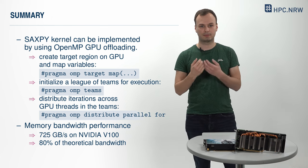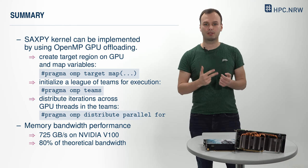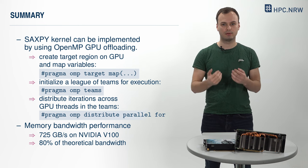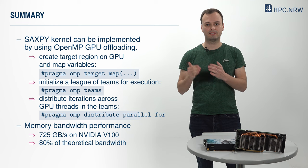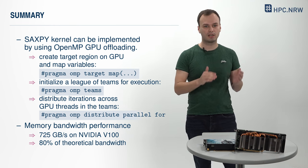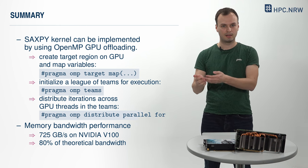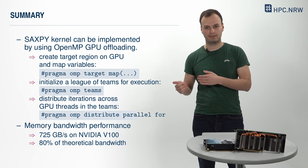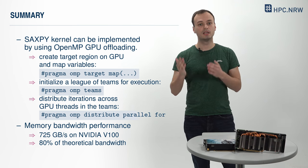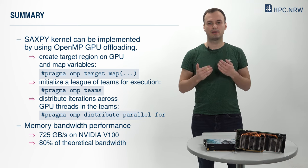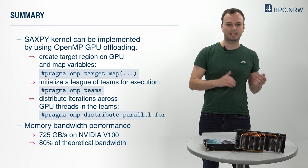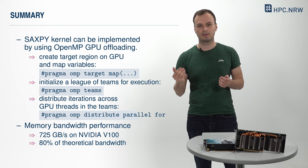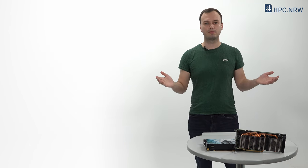Let us summarize the implementation of the SAXPY via OpenMP GPU offloading. The three most important OpenMP directives are: first, pragma OMP target map, which creates the target region on the GPU and maps the relevant variables between host and device data environments; then, pragma OMP teams, which initializes a league of teams for the SAXPY execution on the GPU; and the last directive, pragma OMP Distribute Parallel for, which distributes the iterations across all GPU threads in the teams to achieve the best performance. The GPU memory bandwidth is benchmarked against the hardware theoretical performance. A SAXPY computation with sufficiently large vectors can steadily achieve 725 GB per second memory bandwidth on an NVIDIA V100, corresponding to 80% of the theoretical memory bandwidth. So much for OpenMP GPU offloading — see you in another video.